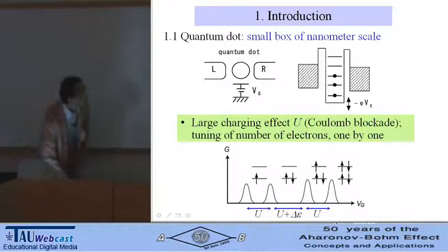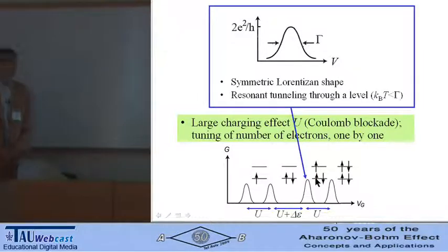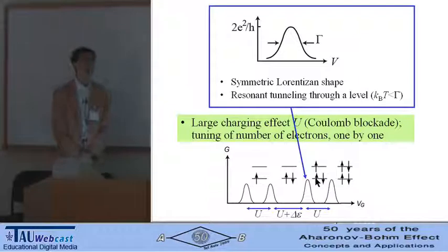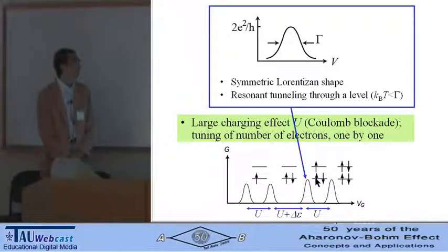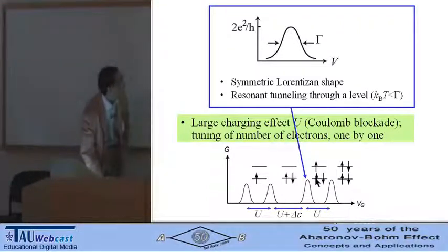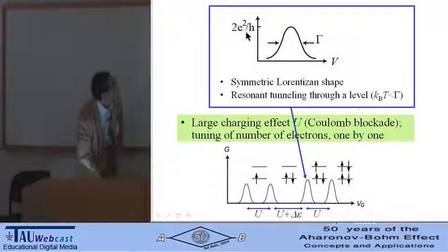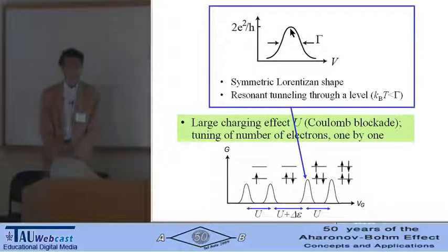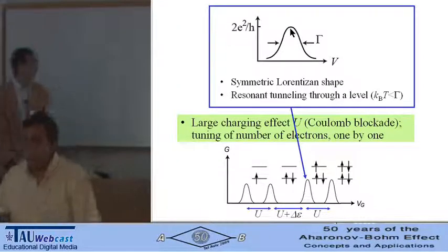Each peak of the current shows a symmetric Lorentzian shape due to the resonant tunneling through one of the quantized energy levels. Conductance becomes 2e squared over h at a peak, and width is determined by the level broadening due to the tunnel coupling.